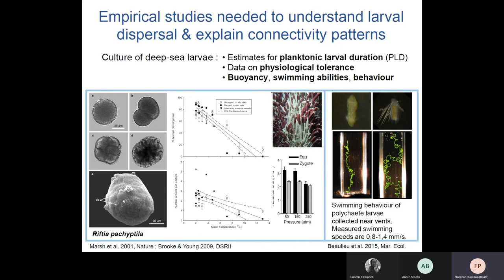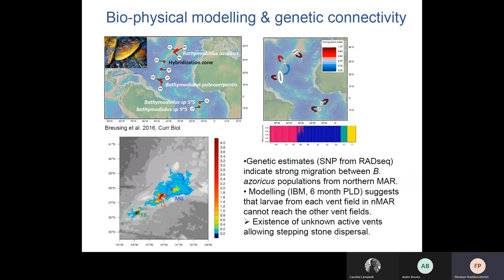Another example shows recordings of larval swimming behavior captured with pumps around vent sites. Finally, biophysical modeling is developing more and more to get estimates of larval dispersal and population connectivity. I chose an example where biophysical modeling has been combined with genetic estimates to infer potential scenarios of connectivity — the example of Bathymodiolus mussels along the mid-Atlantic Ridge, where four species have been identified.